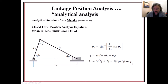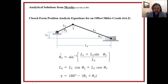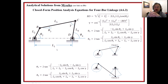The sliding length is often what we want to find, and that's just the law of cosines applied here. For an offset crank-slider, it's a little bit more work but not too bad — you can figure out what L4 is going to be with a little extra geometry.